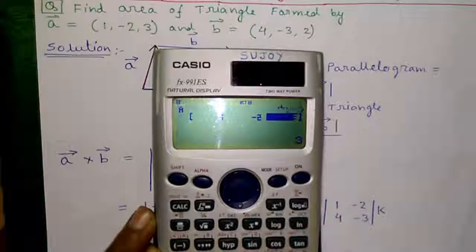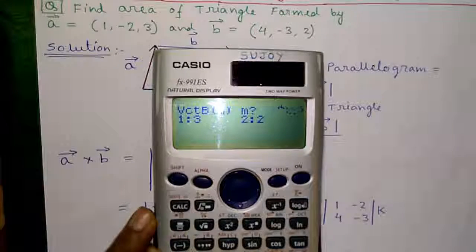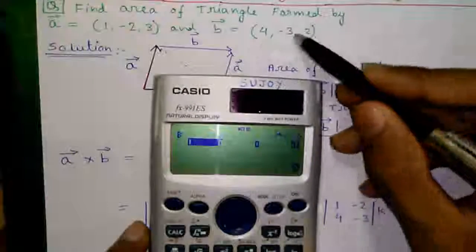Press shift 5, 2 for data, 2 for vector B, 1 for 3 element vector and enter vector B, 4, -3, 2.